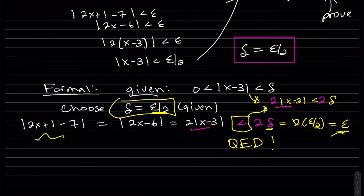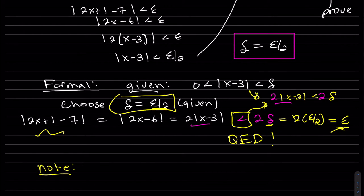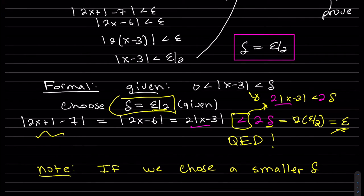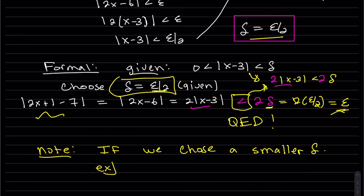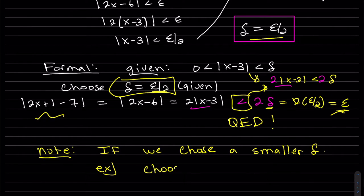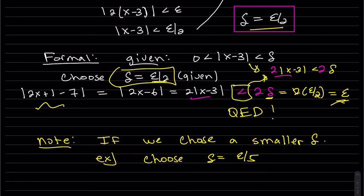Now I did just want to point out, here's a note. So what if I chose a smaller delta? I know I found delta equals epsilon over 2, but what if I chose a smaller delta? For example, in this problem, what if I chose, let's say I choose delta equal, I don't know, epsilon over 5, epsilon over 6, over 7. All of those are smaller because 5 is bigger than 2. So I'm just randomly choosing 5.